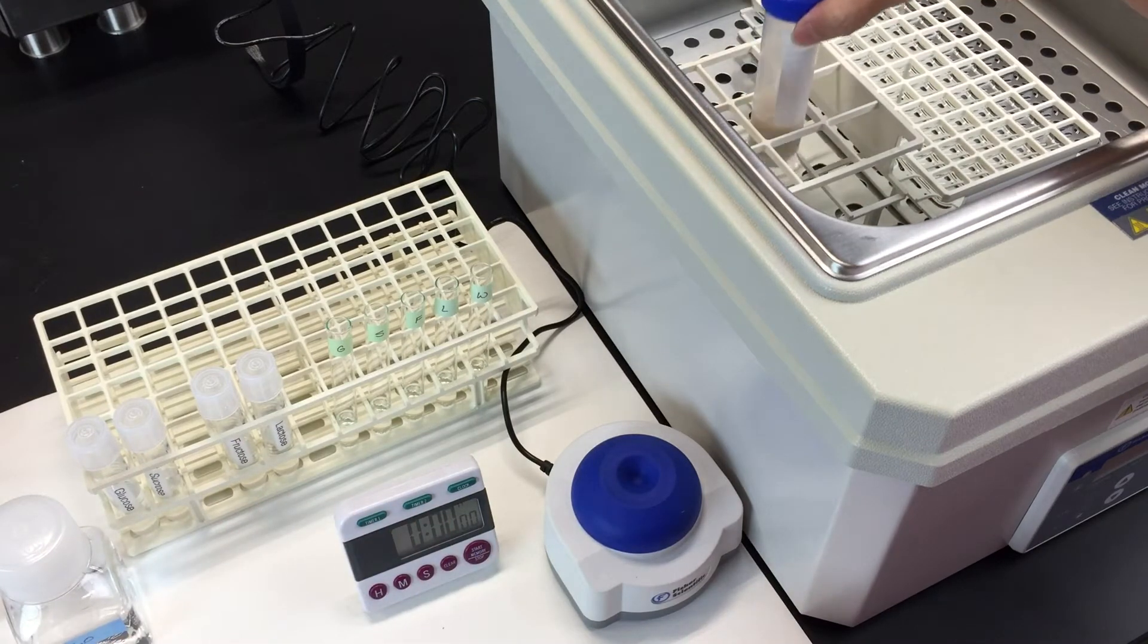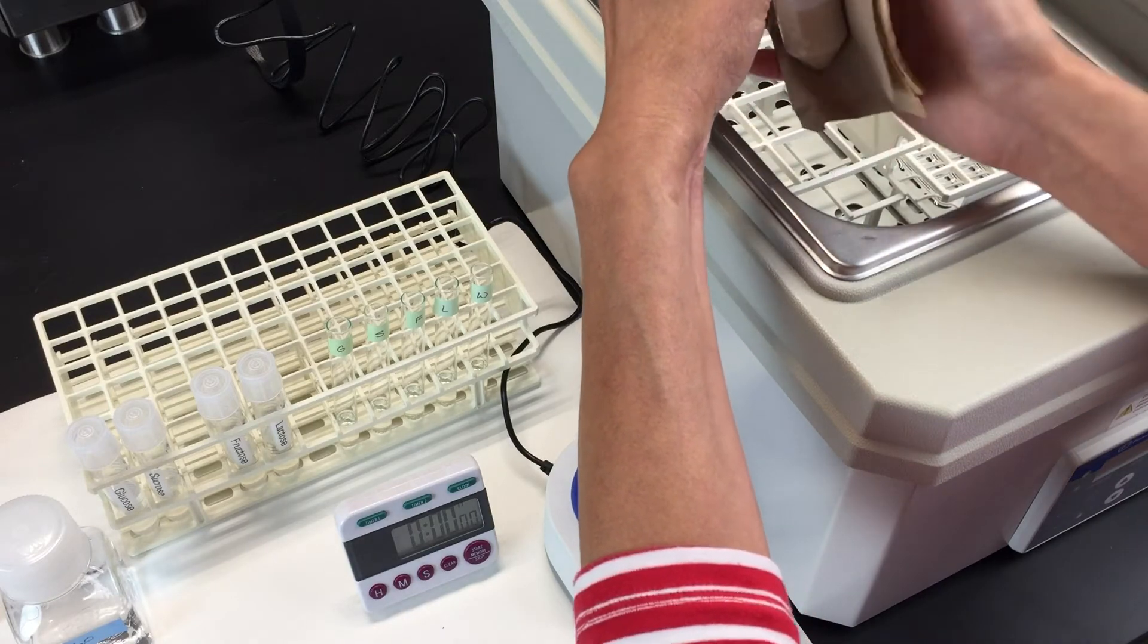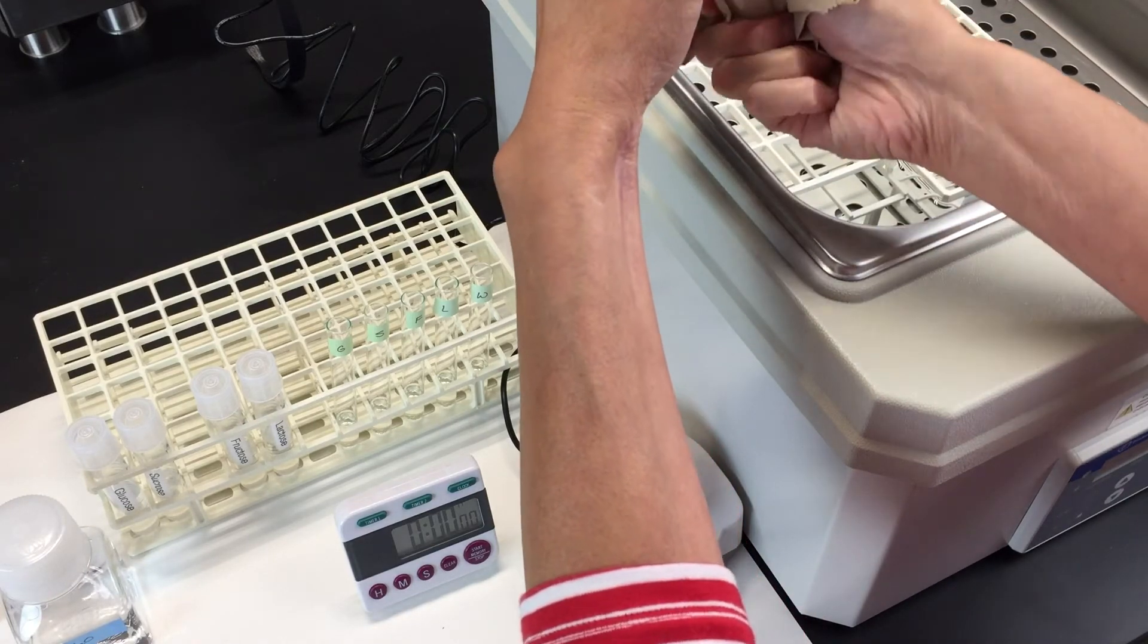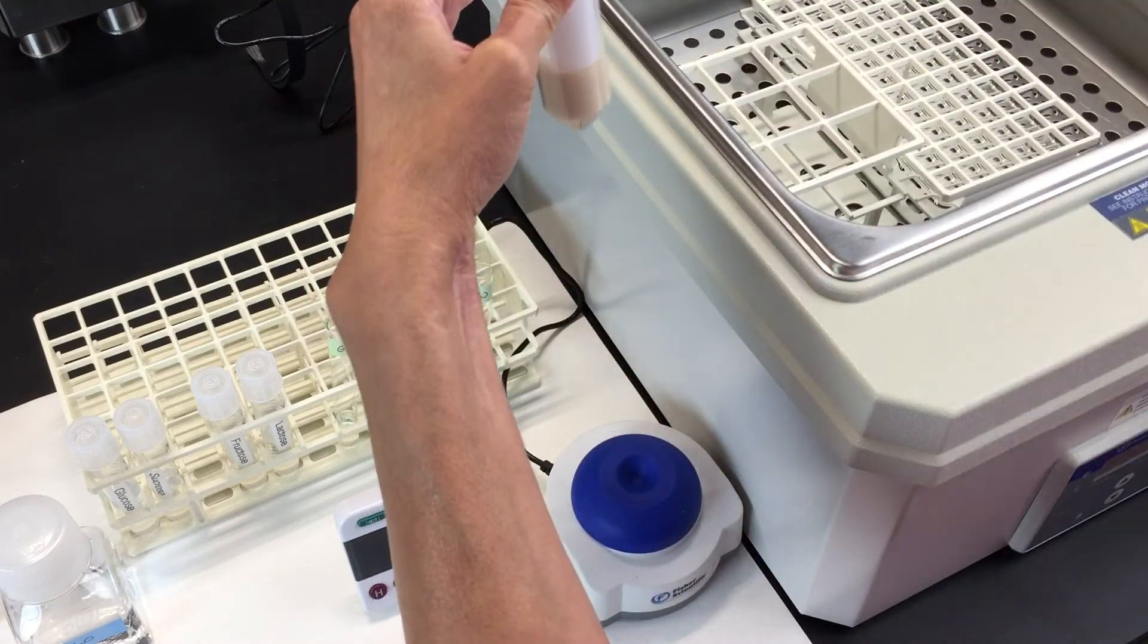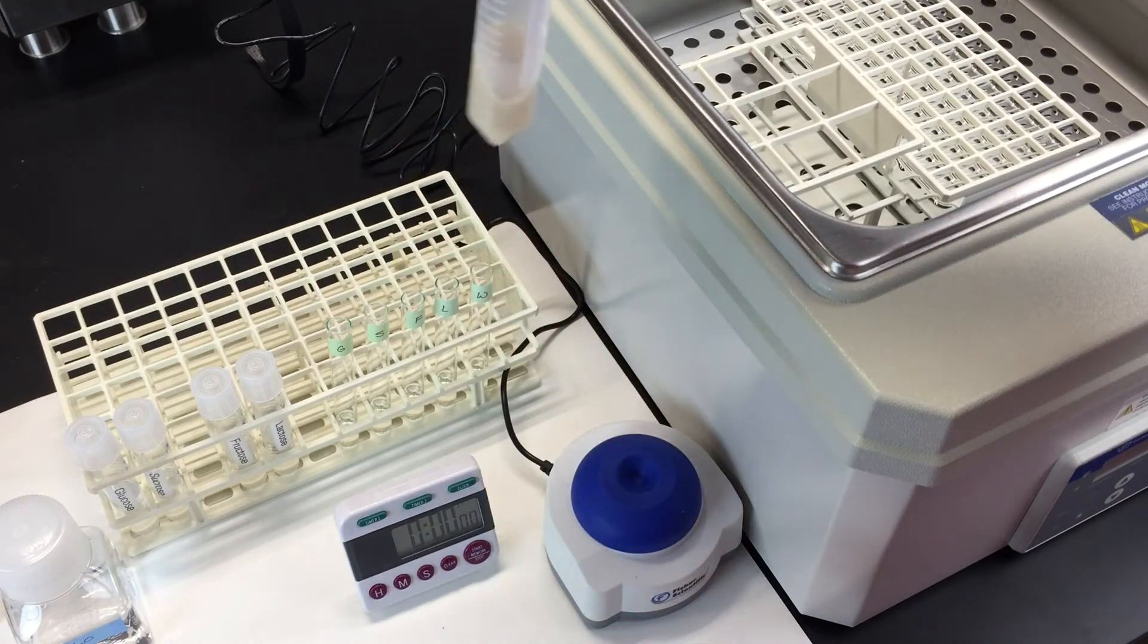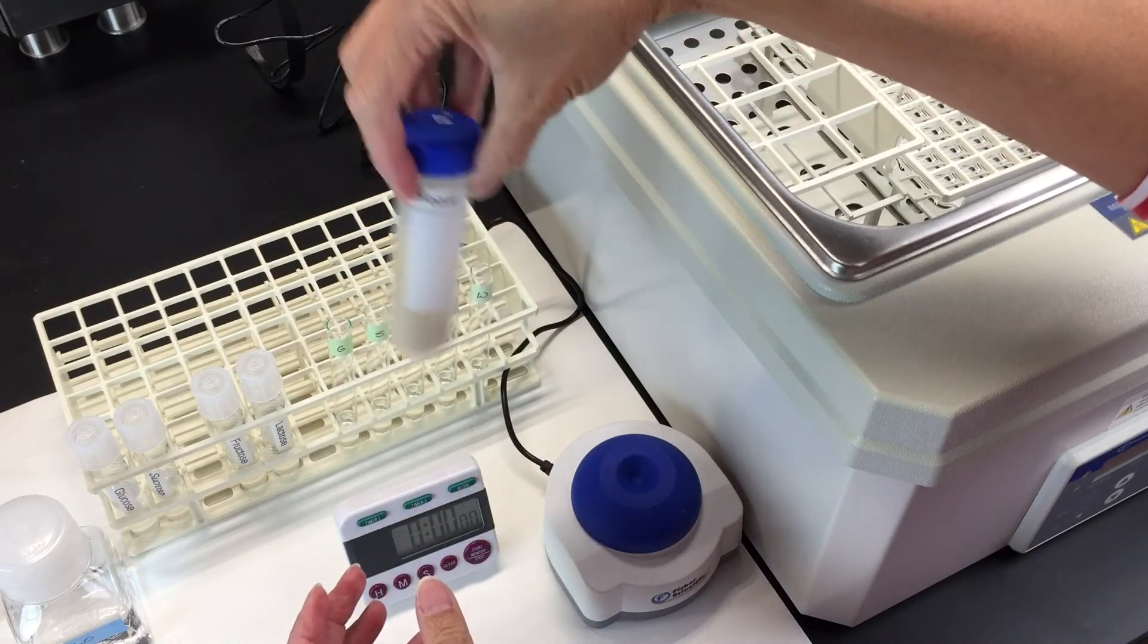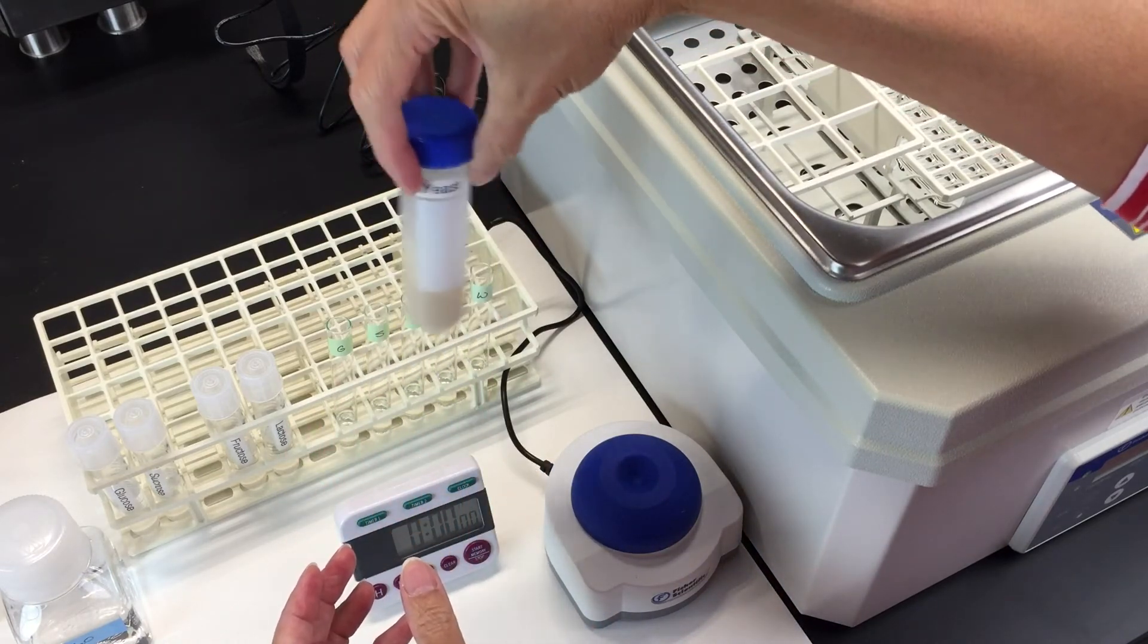Take your yeast from the water bath. After it's been sitting in the water bath, it may have settled a little bit, so you want to swirl it to resuspend it and make the solution a little bit more homogenous.